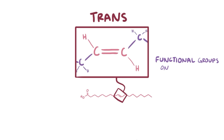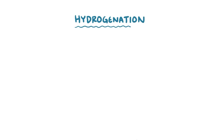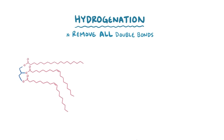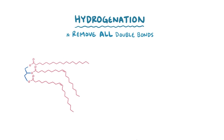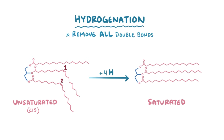Some fats are in a trans configuration. In a trans configuration, the functional groups are on opposite sides of the double-bonded carbons, and this keeps the chain more straight and easier to pack. Trans fats result from a process called partial hydrogenation. In plain hydrogenation, hydrogens are added to cis fats to get rid of all of the double bonds. So if a triglyceride has two double bonds, you'd add four hydrogens — two for each double bond — turning the unsaturated fatty acids with cis double bonds into saturated fatty acids.